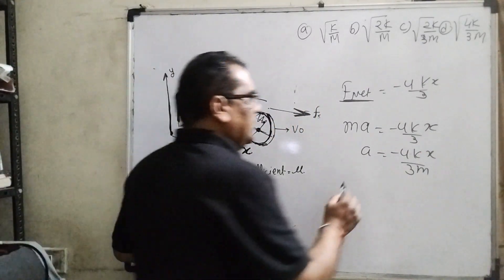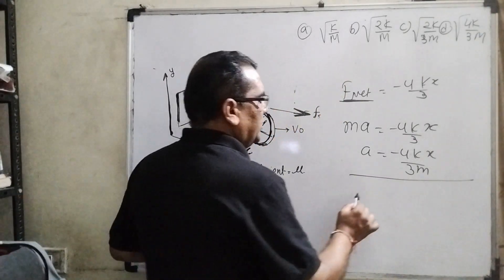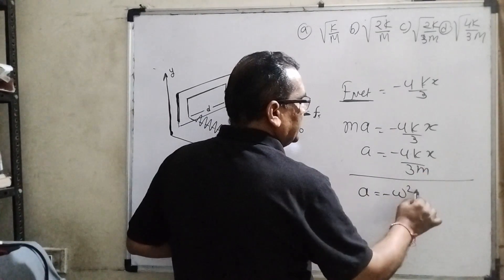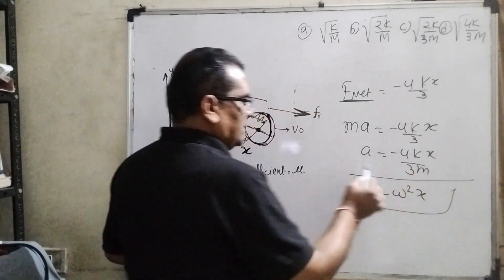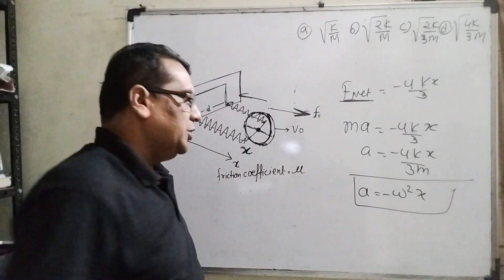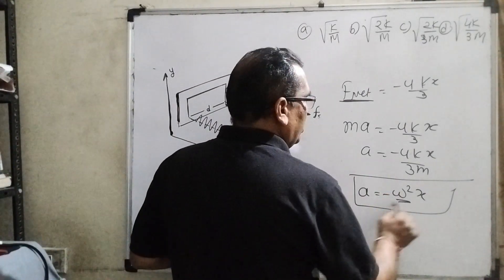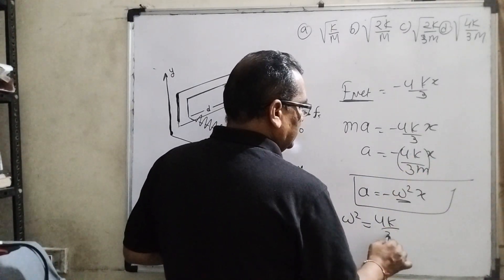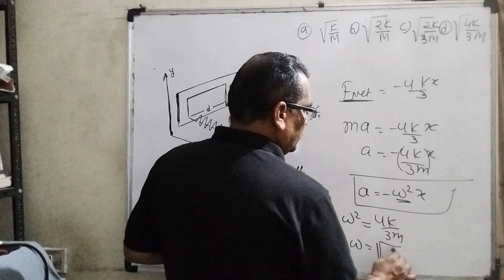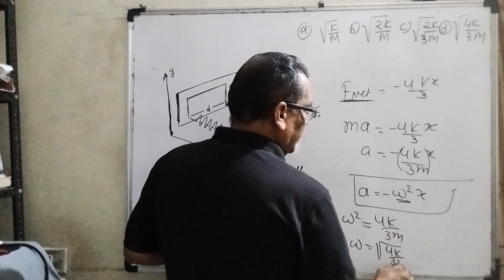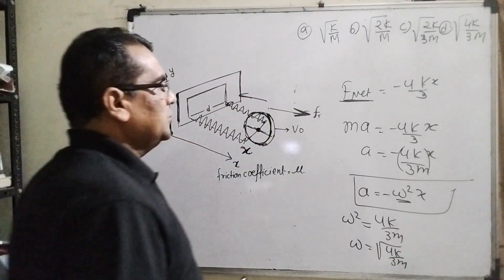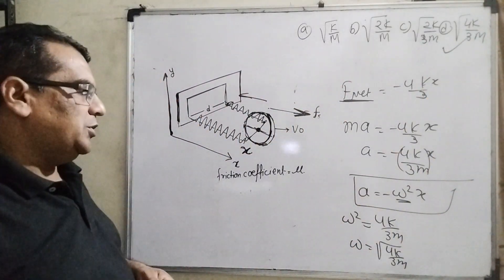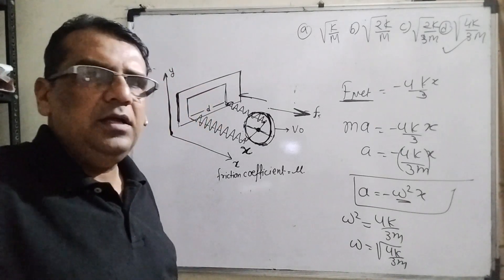Since force equals mass times acceleration, we get acceleration equals minus 4kx/3m. For simple harmonic motion, a equals minus ω² times displacement. Comparing, ω² equals 4k/3m, so ω equals root(4k/3m). This is the correct answer for the angular frequency of SHM.